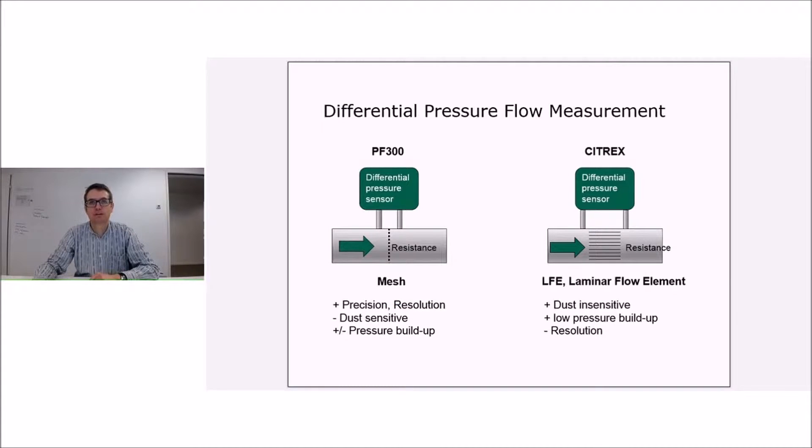When you look through the PF300, in the case of the Citrex we use a laminar flow element which is something like coaxial little tubes. That's also good but not as sensitive as the mesh. That's why the PF300 has the mesh and the Citrex has this laminar flow element. It is less sensitive to dust but a little less accurate.